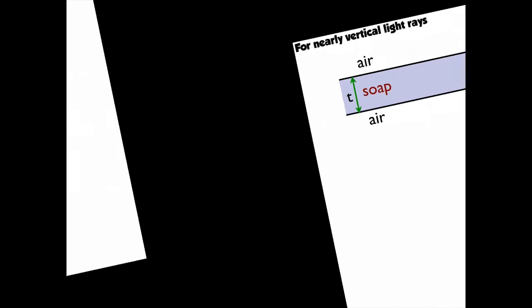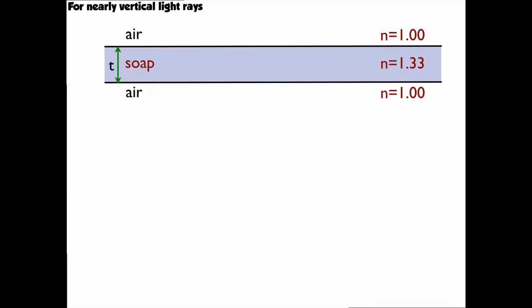This is a thin film interference summary. This summary works for nearly vertical rays. If there's too much of an angle, there's a little more to it. My drawings would be at quite a bit of an angle, but we're going to take it on as if the light was coming in pretty much vertically.